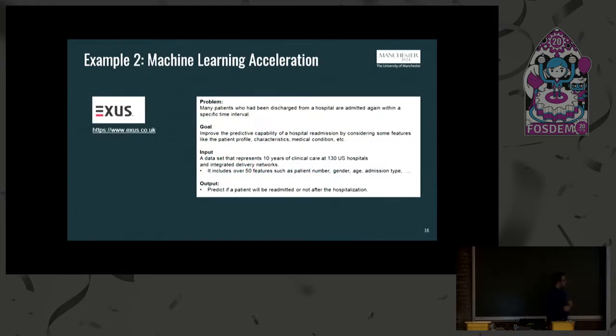The second case is a machine learning acceleration. So this use case has been developed by Exus, which is the coordinator of the E2Data project. The main problem here is that patients are going to the hospital, they are hospitalized, they are admitted there, and then they are leaving hospitals. But there is a chance that they may be readmitted depending on their profile, on the disease, the conditions, and other characteristics, other features. So the idea here is to create a machine learning model which will accurately predict how possible it is for a patient to return back to the hospital. So Exus saw that by deploying TornadoVM they can achieve up to 14 times higher performance for a dataset which has 2 million patient data.